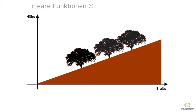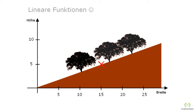Now imagine that we are positioning ourselves somewhere on this mountain. We stand here and want to know how high we are and how far from the point of origin below. For this purpose, we label the two axes width and height. When we stand here we ask ourselves, how can we describe our position?